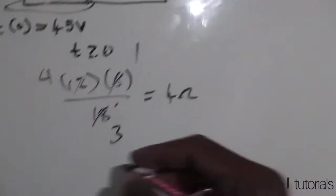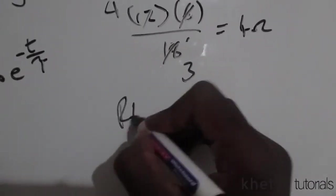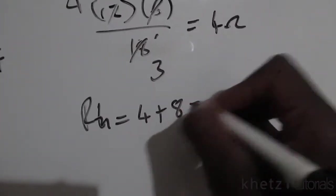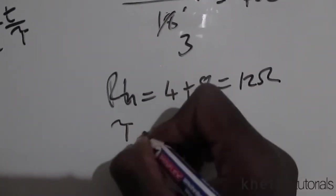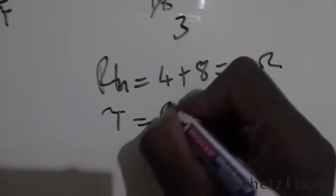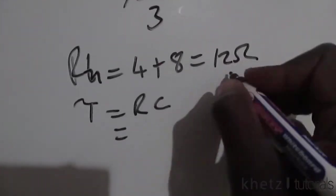After that you add your 4 ohms to this 8, which means Rth with respect to your C would be 4 plus 8 which is 12 ohms. Now to compute the time constant, you say tau equals RC.